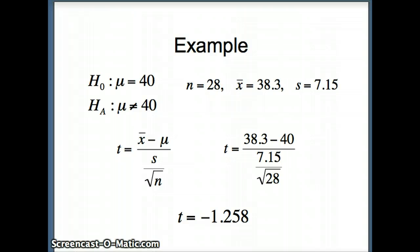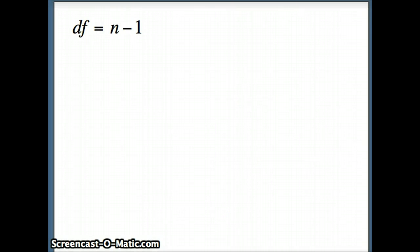We need to figure out the p-value, which will tell us how extreme our original data set is. If our original data set is very extreme, assuming H₀ is true, then that's evidence that maybe H₀ isn't true. But if this is not very extreme, then it's likely H₀ could be true. Degrees of freedom is n minus 1. In this case, our degrees of freedom is 28 minus 1, or 27.